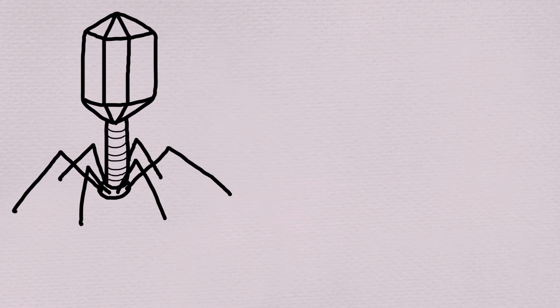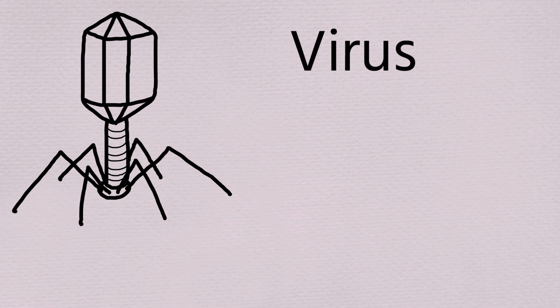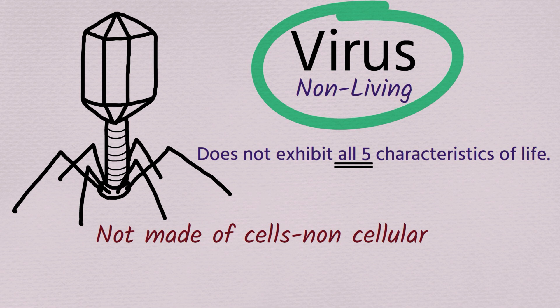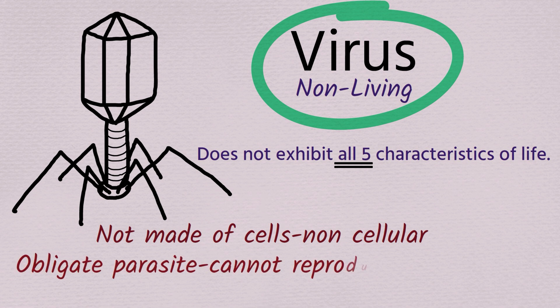Let's apply our learning. Here is a diagram of a virus. A virus is considered by scientists to be non-living because it does not exhibit all five characteristics of life. For example, it does not exhibit organisation — it's not made of cells, it's non-cellular. And regarding reproduction, it's an obligate parasite and cannot reproduce independently.